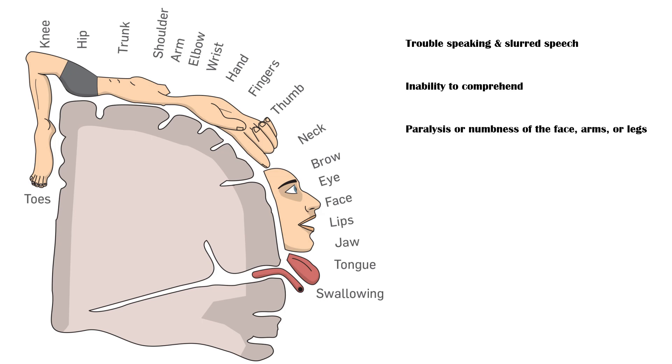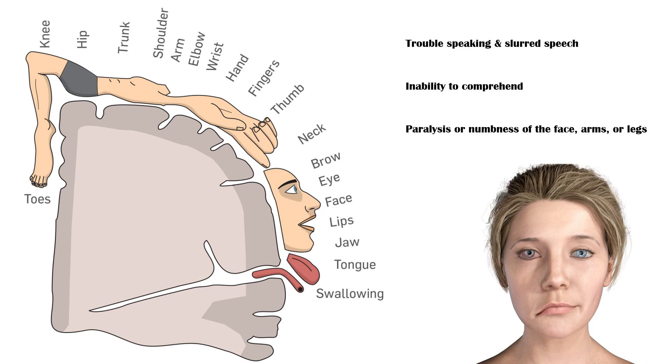Paralysis or numbness of the face, arms, or legs, which often affects just one side of the body. In addition, one side of the mouth may drop when the patient is trying to smile.